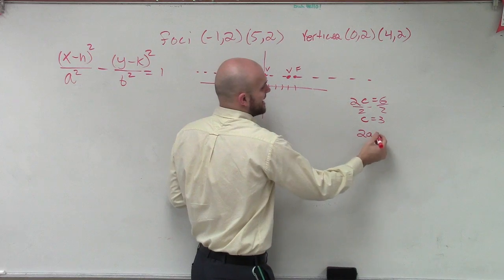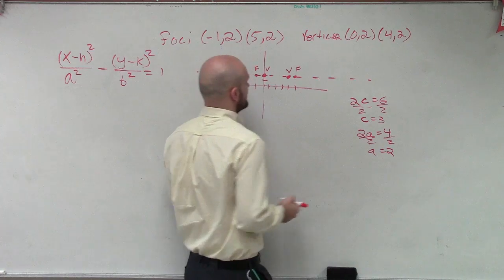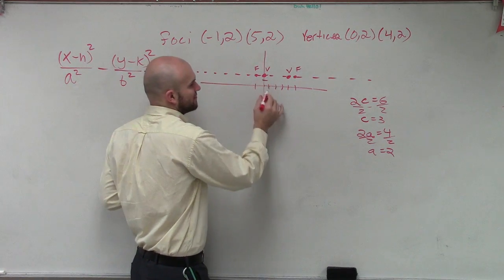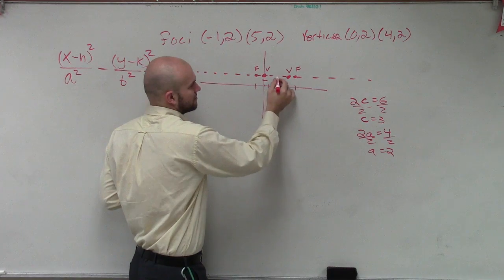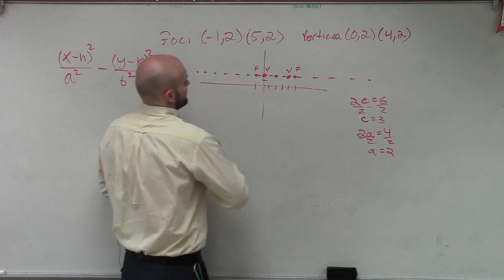So, you could say 2a is equal to 4, divide by 2, a equals 2. Now, again, let's go in 2 units from our vertices. 1, 2. Let's make this a different time. 2 comma 2 is the center.